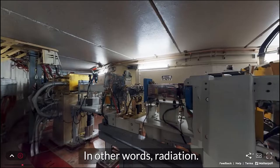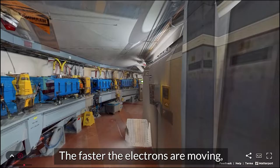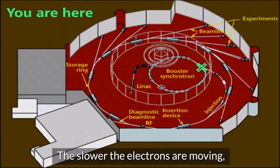The faster the electrons are moving, the higher their energy, and thus the shorter their wavelength. The slower the electrons are moving, the lower their energy, and thus the longer their wavelength.